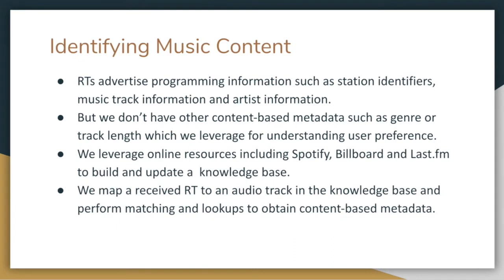Now we see how music content is identified by FMHOP. We know that RTs advertise programming information such as station identifiers, music track information, and artist information. But we don't have other content-based metadata such as genre or track length, which we leverage for understanding user preference. For this purpose, we rely on online resources including Spotify, Billboard, and Last.fm APIs to build and update a knowledge base stored locally on the FMHOP server. We map received radio text to an audio track in the knowledge base and perform matching and lookups to obtain content-based metadata.